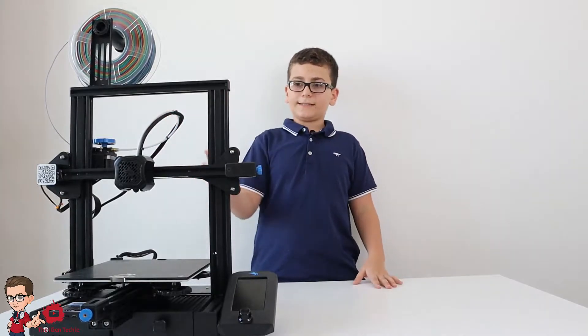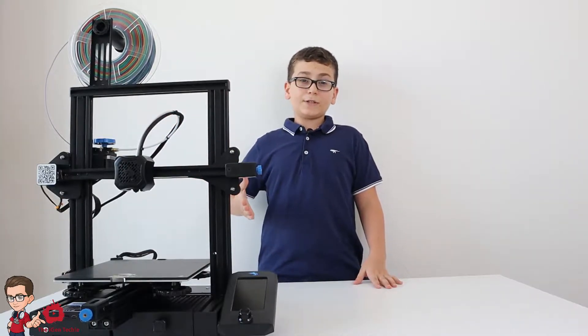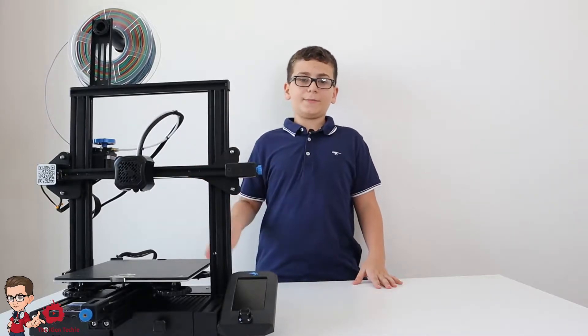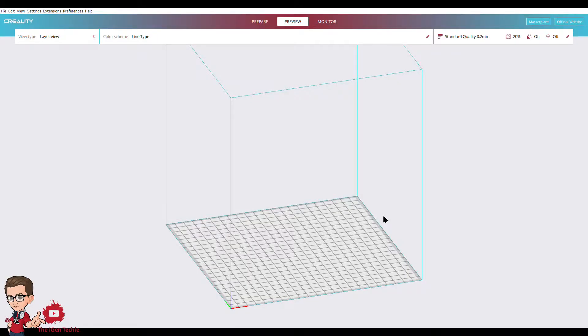As you might know, Creality have their own slicer, which is based on Ultimaker Cura, which is bought by Ultimaker. Now we're going to slice the print, so what we must do first is place the print.